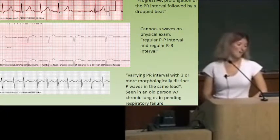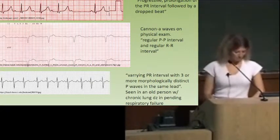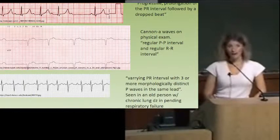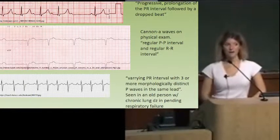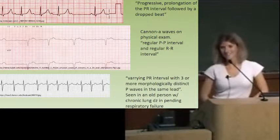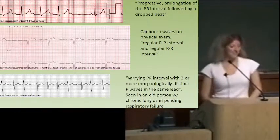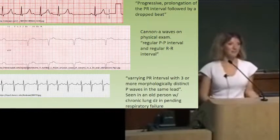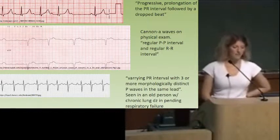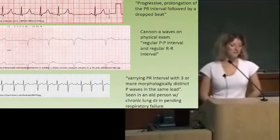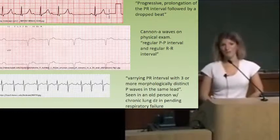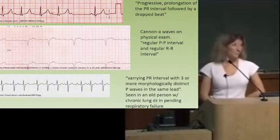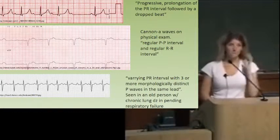The second EKG: third-degree heart block. On physical exam you might find cannon A waves. In the clinical vignette they might describe a regular P-to-P interval and a regular R-to-R interval, but as we can see from the EKG, they're not associated with each other at all — there's not a P before every QRS spaced out regularly.